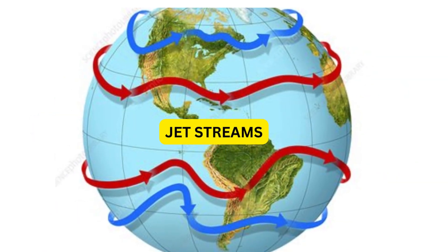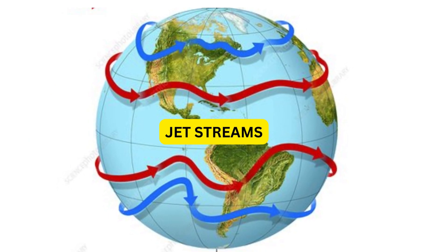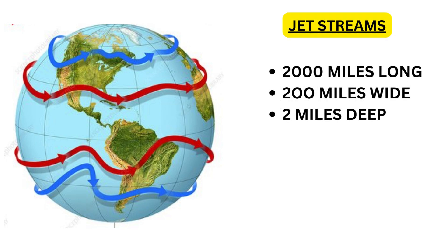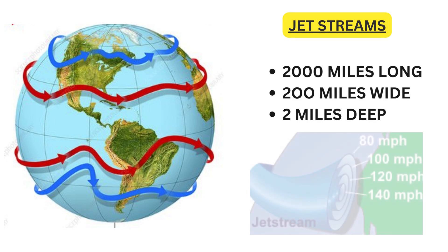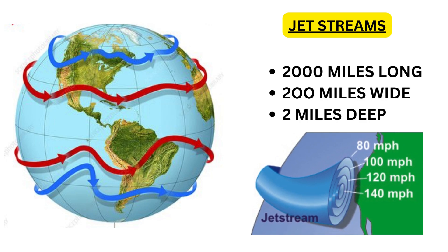Now we will discuss about the mysterious jet streams. Jet streams are strong currents of air that circle the entire globe at a height of 10 to 15 km near the tropopause. Jet streams have a minimum of 60 knots of wind speed; 100 to 200 knots are common, and it can get as high as 300 knots occasionally. On average, jet streams are 2000 miles long, 200 miles wide, and 2 miles deep. Speed is maximum at its core, and as we move away from the center of the core area, speed reduces.